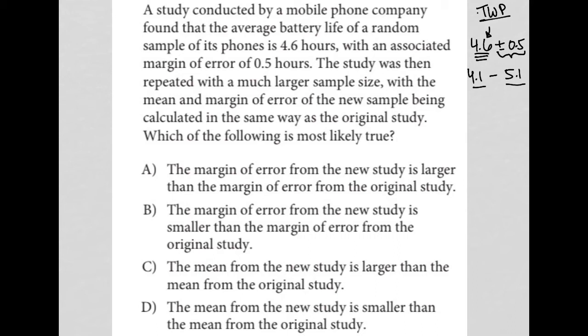So choice A says the margin of error from the new study is larger than the margin of error from the original study. I'm going to cross that out because you should not and you will not have a larger margin of error by having a larger sample size. That just does not happen. Choice B, the margin of error from the new study is smaller than the margin of error from the original study. That is what we expect. So I like choice B.